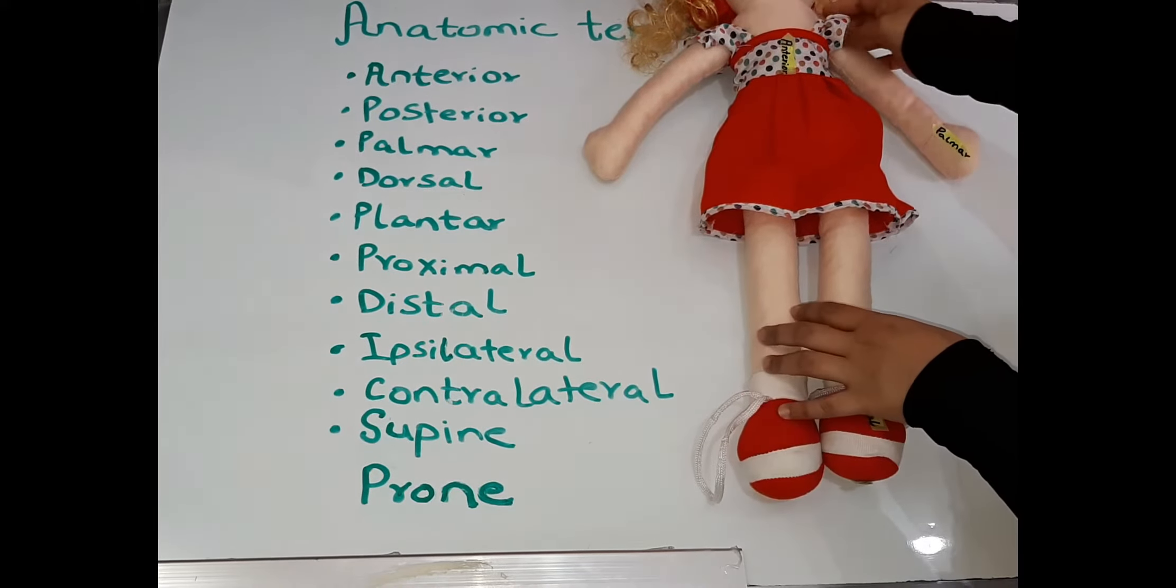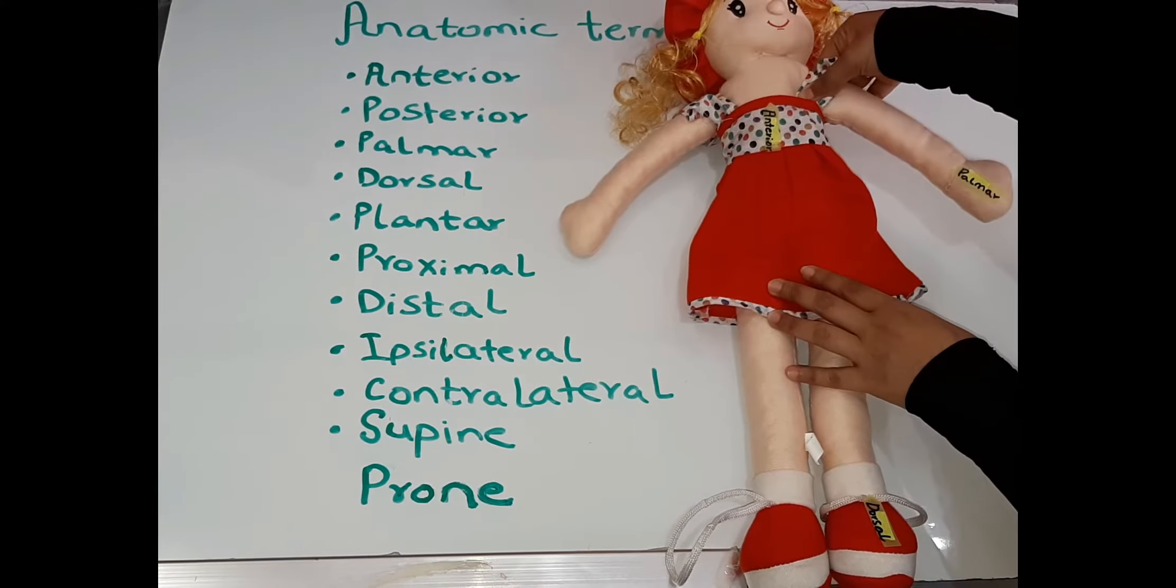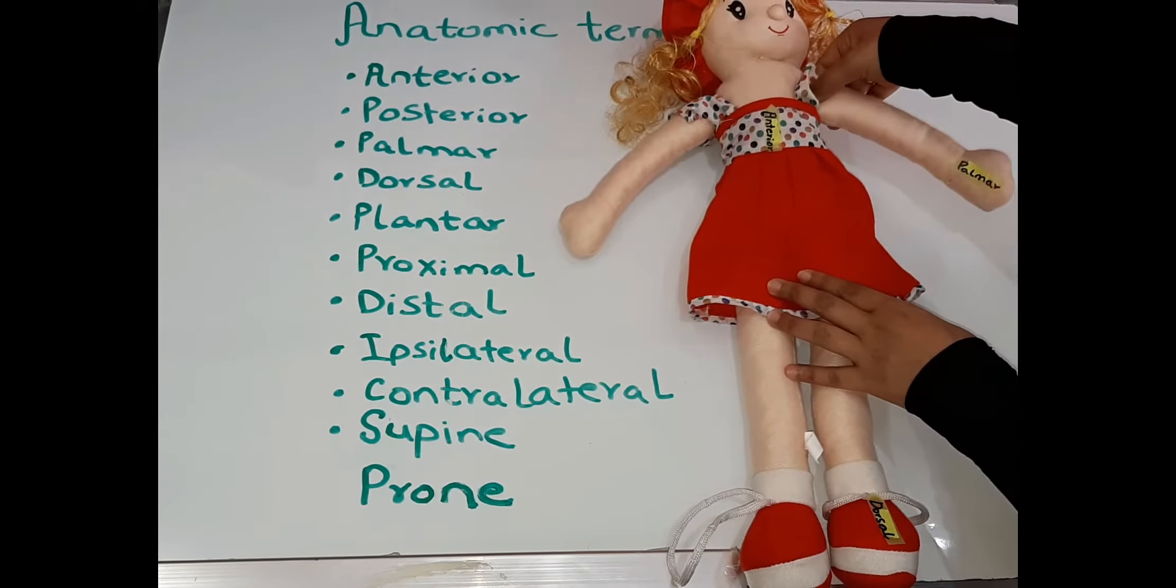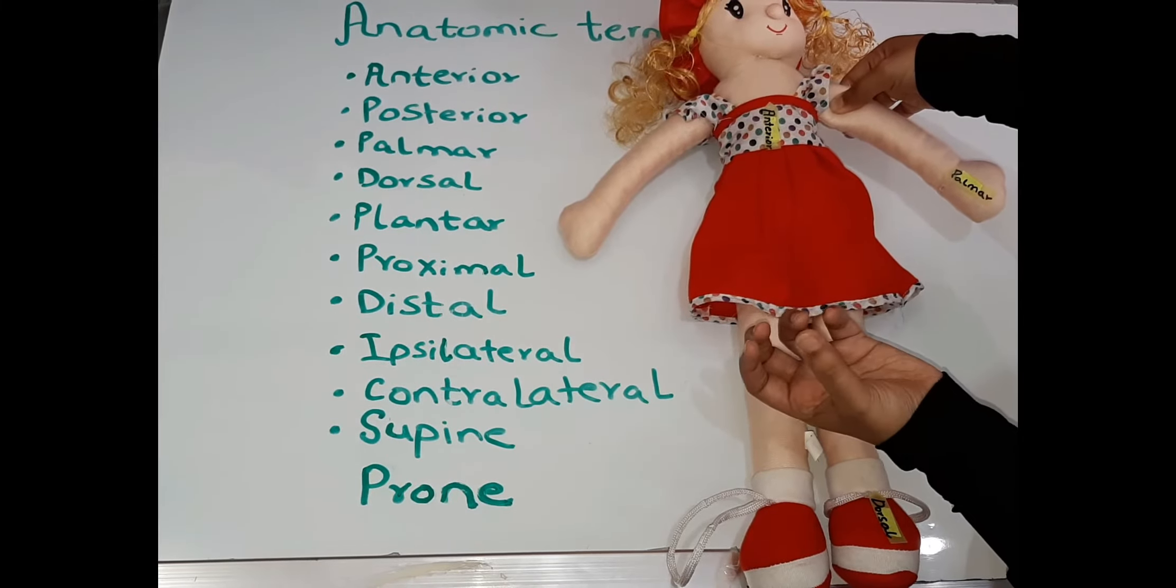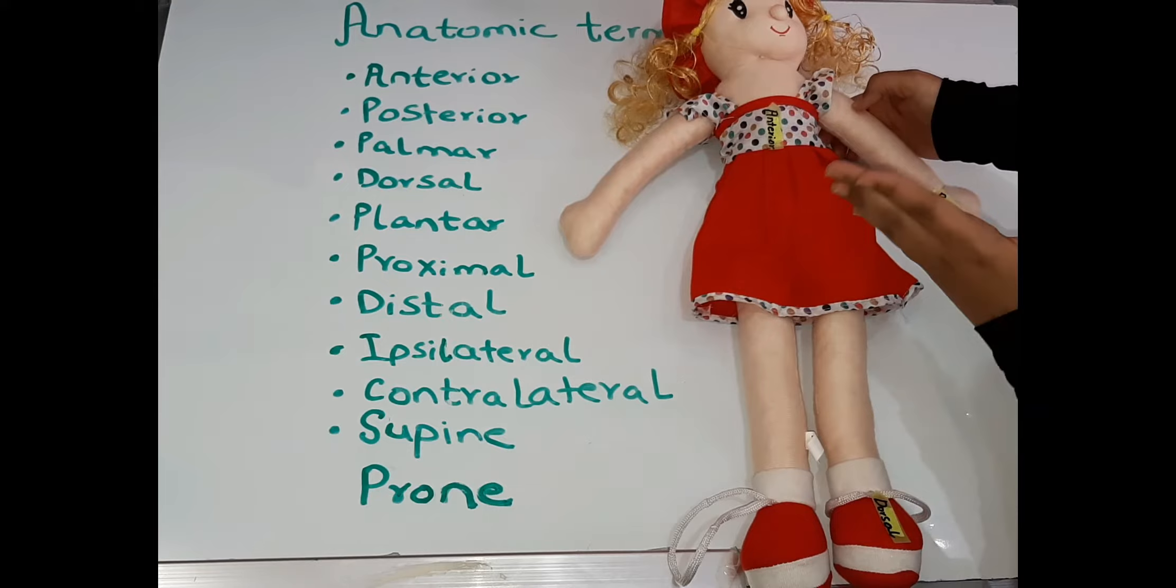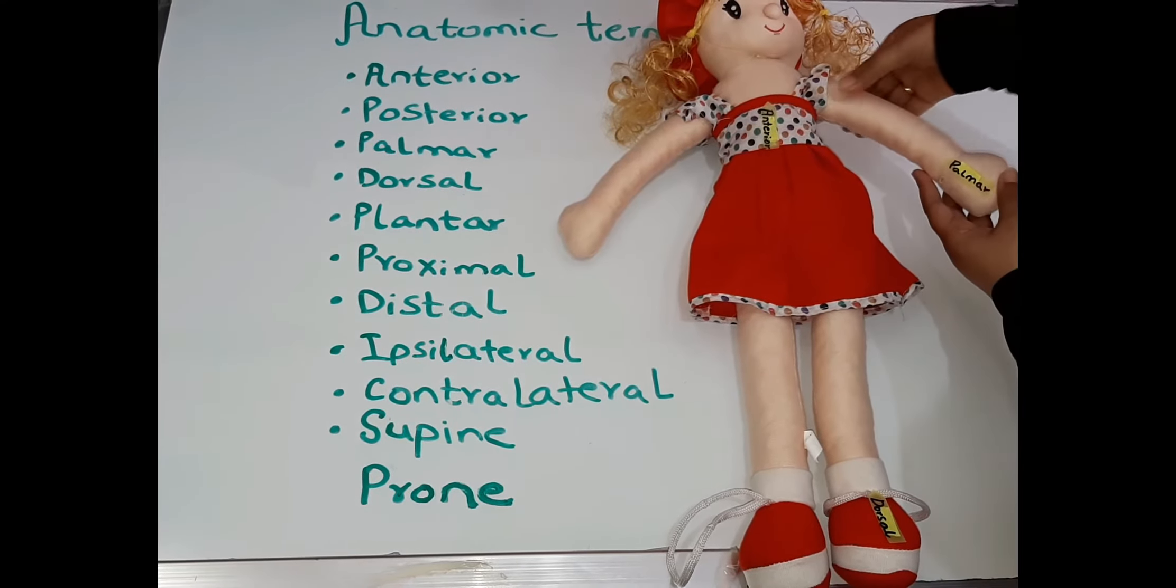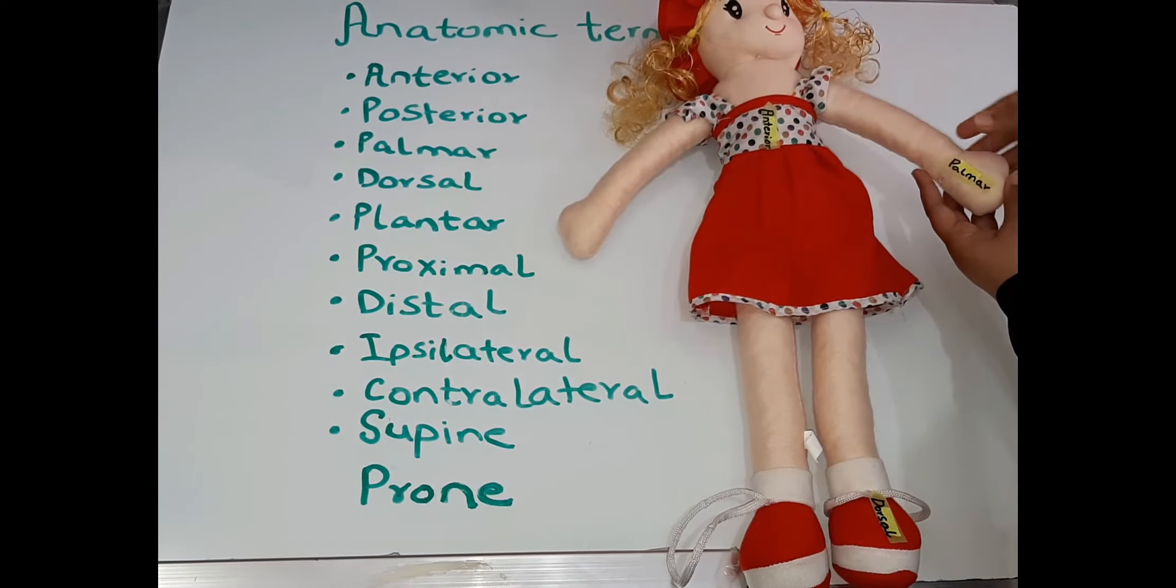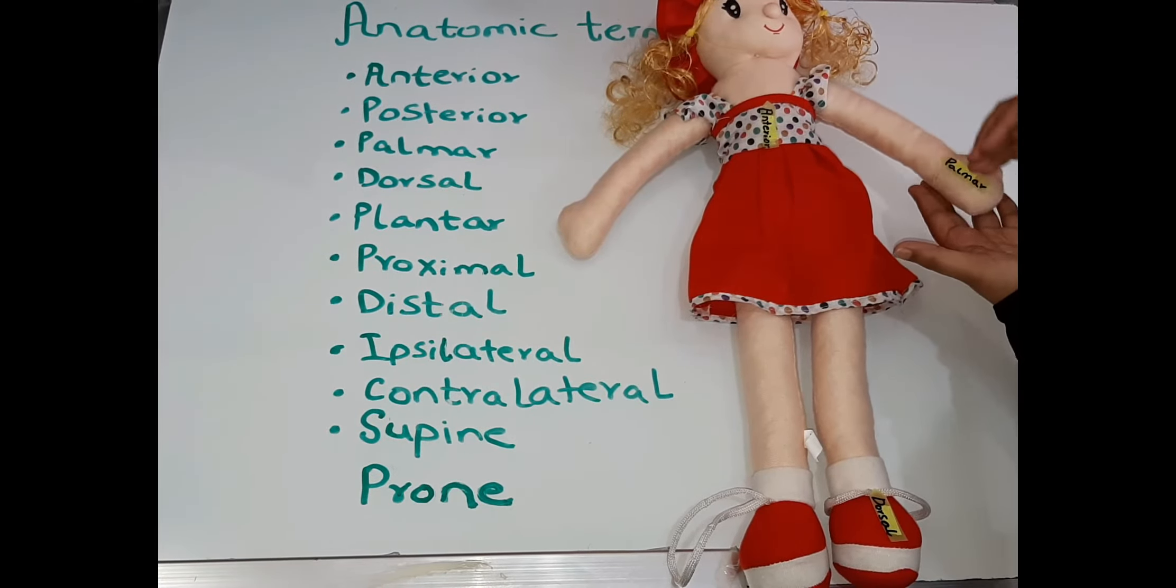Coming to the terms proximal and distal. The terms proximal and distal are relative to the origin of the limb. So if this is the origin of the limb, the arm is the most proximal. The word proximal comes from the word proximity which means close and distal comes from the word distant which means far away. So the arm is proximal to the forearm while the hand is distal to the forearm and is the distal most structure.